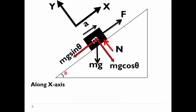So along x axis, what can you see? We can see that F and Mg sin theta are acting in opposite direction and resulting in given acceleration A. Hence F minus Mg sin theta will give the resultant force.